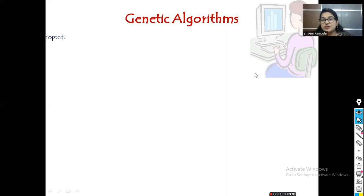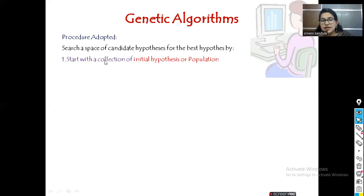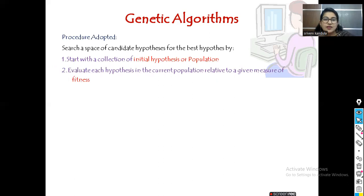Before going to the algorithm, I'll briefly give you the steps we follow. The genetic algorithm is mainly aimed to search a space of candidate hypotheses in order to find the best hypothesis. This is done by starting with a collection of initial hypotheses — which we call the population — and then evaluating each hypothesis in the current population in relation to fitness.